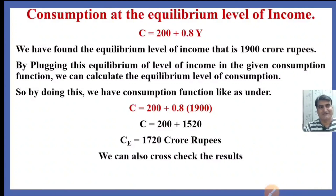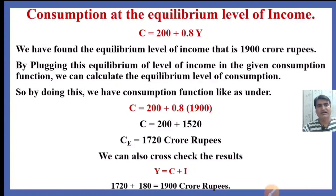We can also cross-check these results. As we know, income equals consumption plus investment. 1,720 crore rupees is the consumption expenditure we determined, and 180 crore is the investment. So consumption plus investment equals 1,900 crore rupees — which confirms our equilibrium income.